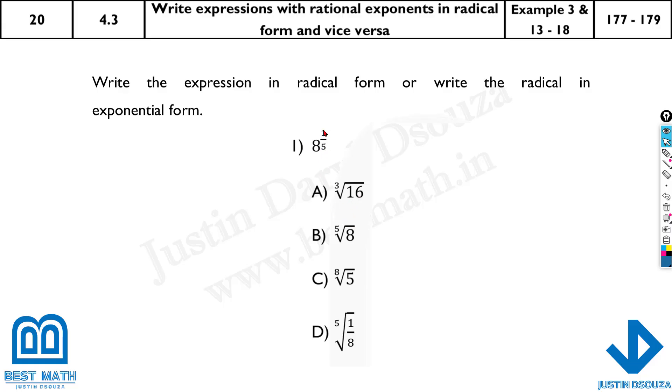Here we have 8 to the power 1 by 5, there is 1 fifth which is the correct one. If you look carefully, 1 by anything means it's the root of that number. If I had 8 power 1 third, it's the cube root of 8, but here I have 1 fifth, so it's the 5th radical of 8, that's it.